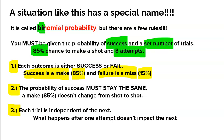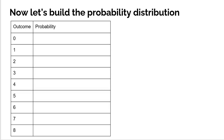Let's build the probability distribution for this specific situation. We know we can make a list of all the outcomes. The probability of success — we typically call that P — is 85%, and the number of trials, N, is 8. Free of charge, we get one minus P, which is the failure rate — in this case, 15%. So let's find the probabilities for each outcome. Starting with making zero shots: she needs all eight to be misses. She's a pretty good free throw shooter, so this is probably going to be pretty unlikely.